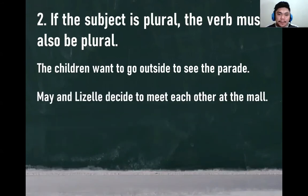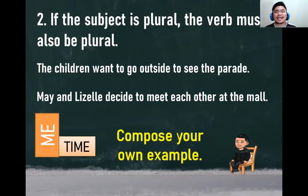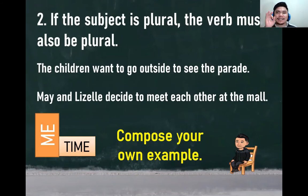Another example: 'May and Lizelle decide to meet each other at the mall.' May and Lizelle — this subject is plural. Therefore, it requires the base form of the verb. I'll be giving you five seconds to compose your own example.